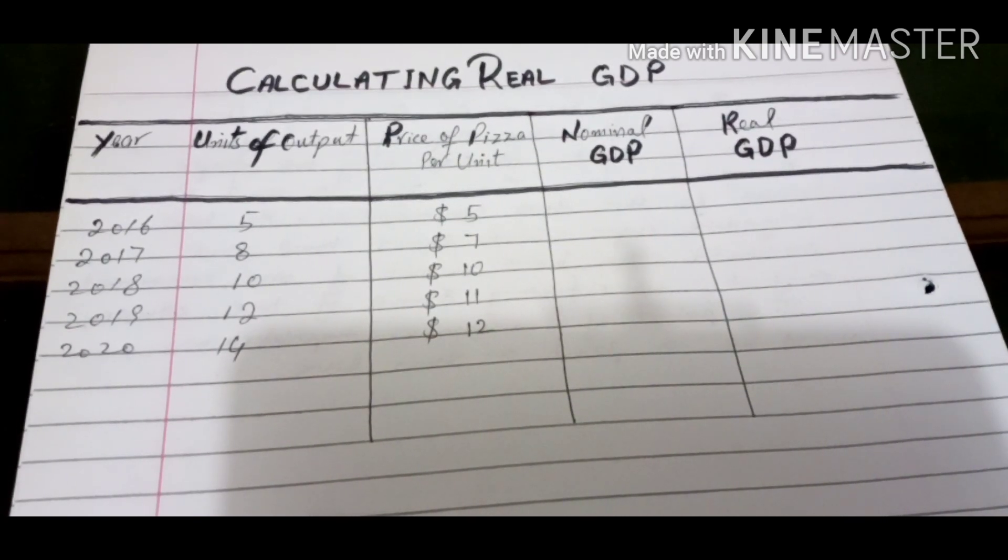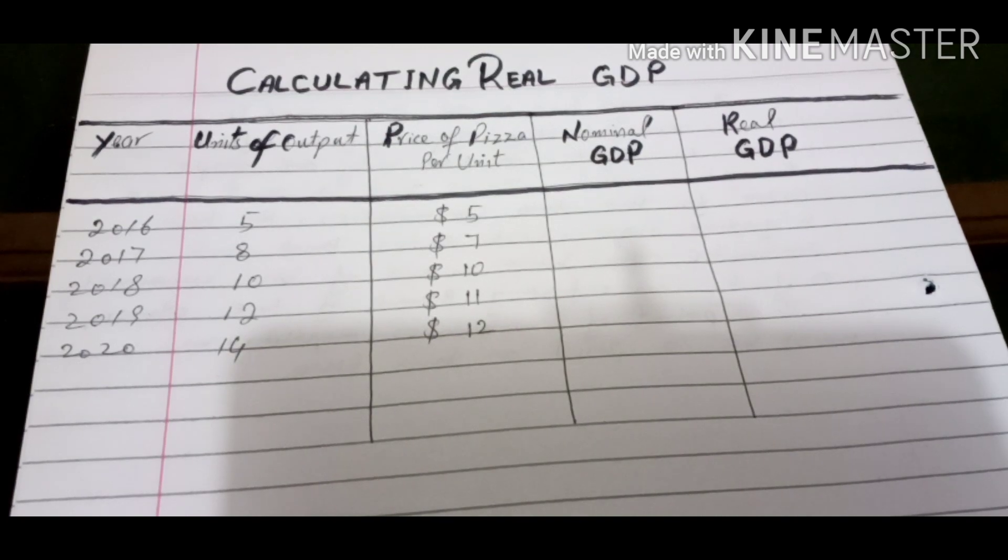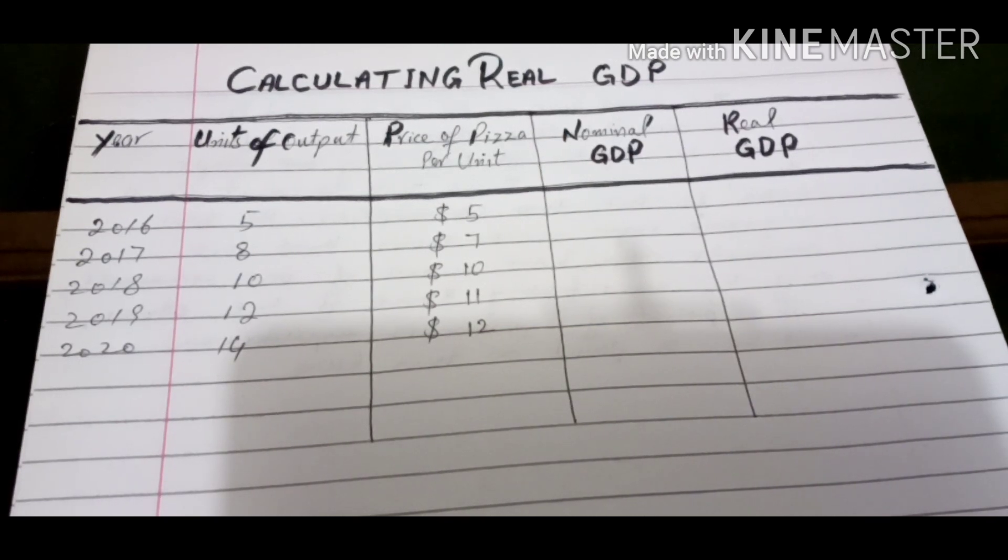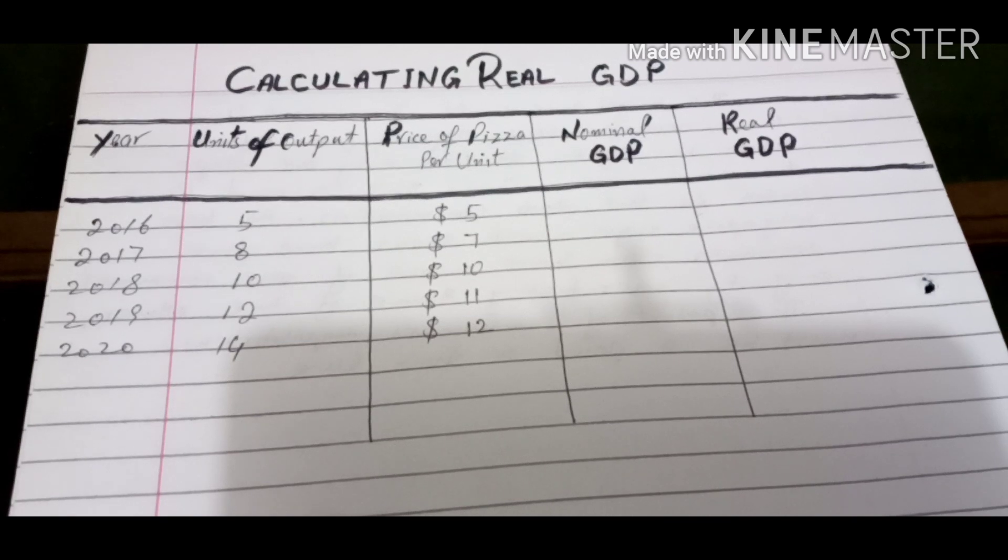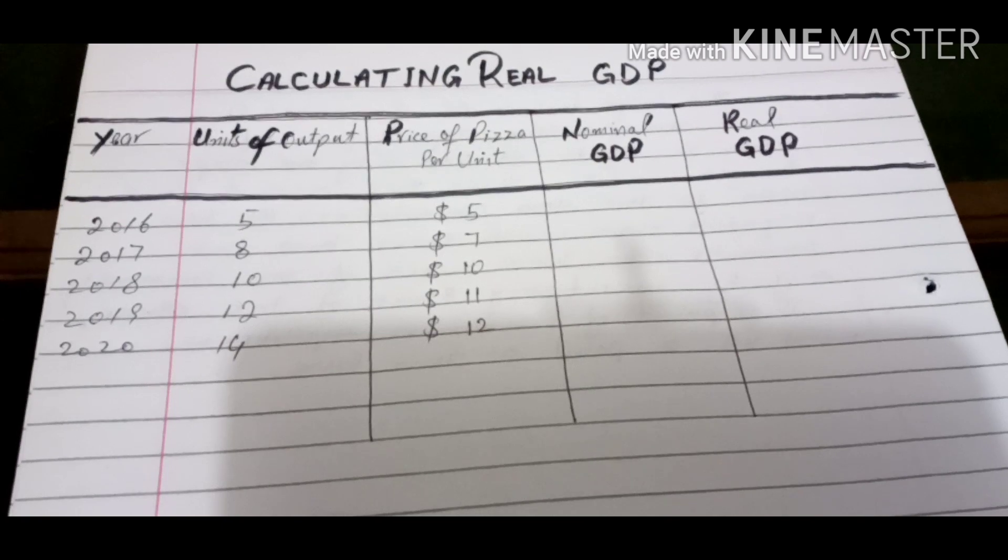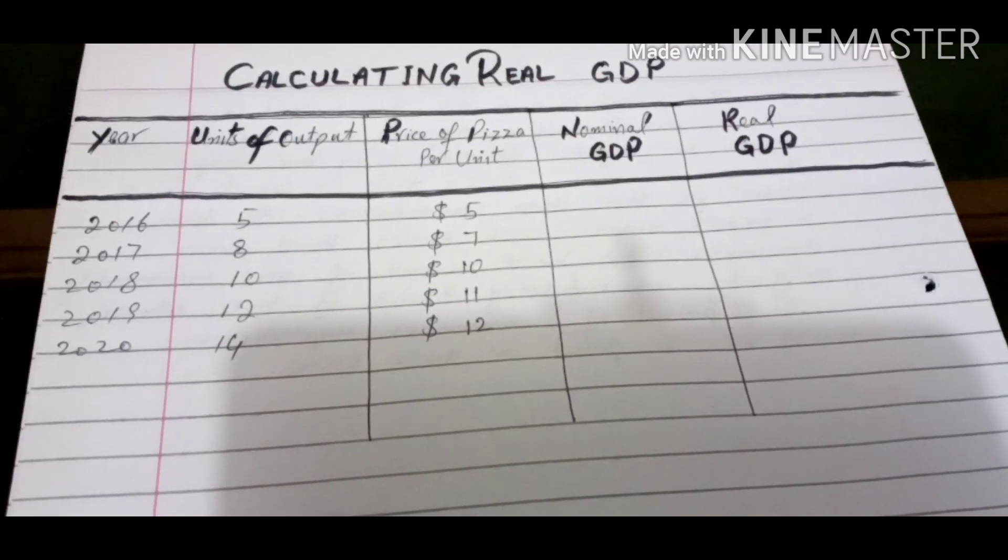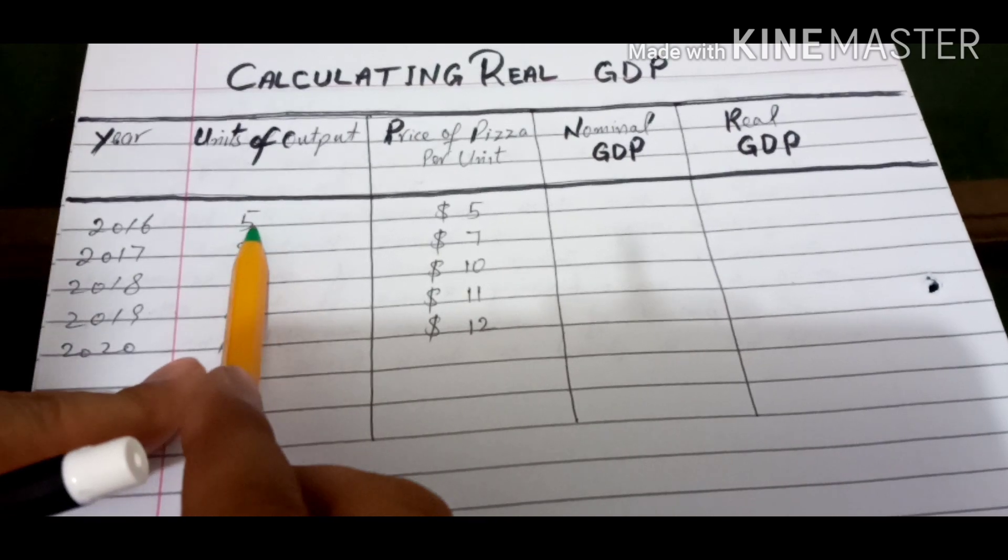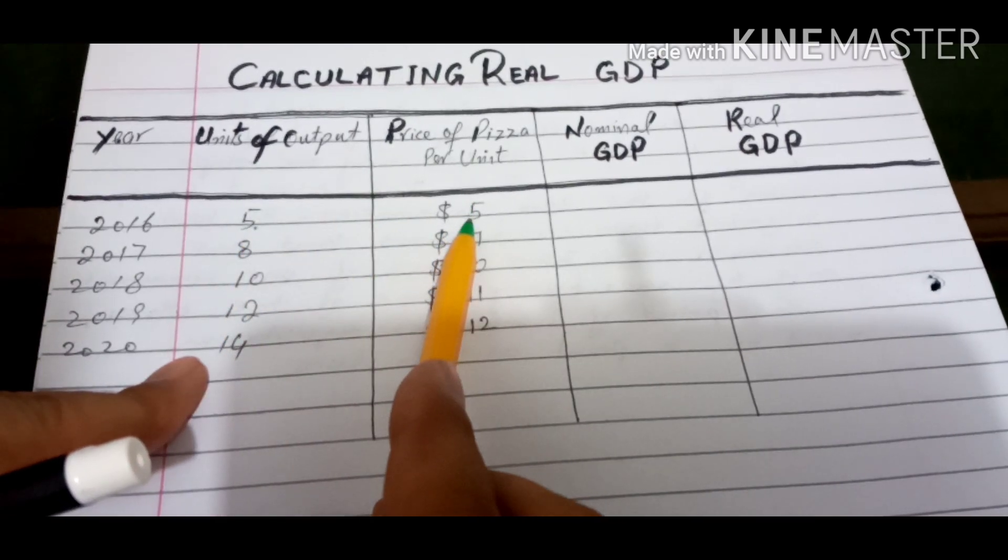Hello friends, we are going to calculate nominal GDP and real GDP. For simplicity, we have taken units of output of pizzas and price of a pizza per unit. Now let's see how to calculate nominal GDP and real GDP. We can calculate nominal GDP by multiplying the units of pizza with the price of pizza.